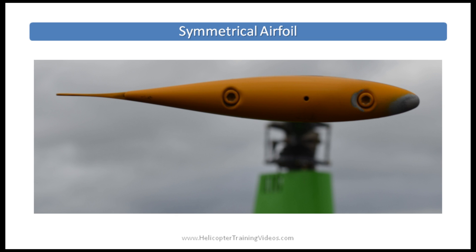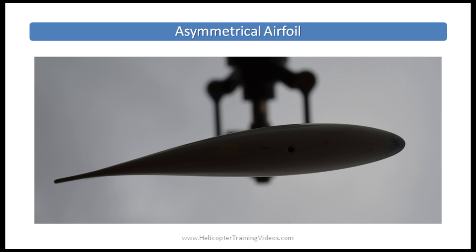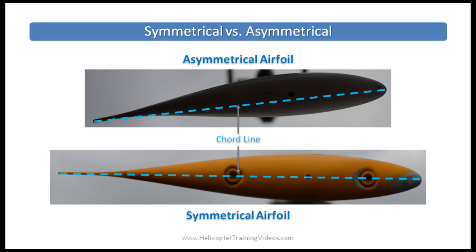Here's an example of a symmetrical airfoil — the R-22's main rotor. You can see it looks symmetrical; the top and bottom look the same. This is a picture of the R-22 tail rotor, which is asymmetrical — it does not have the same upper and lower camber. Lining them up alongside each other: on the tail rotor the cord line does not evenly split the upper and lower sections, but on the main rotor it sits right down the center of the airfoil shape.